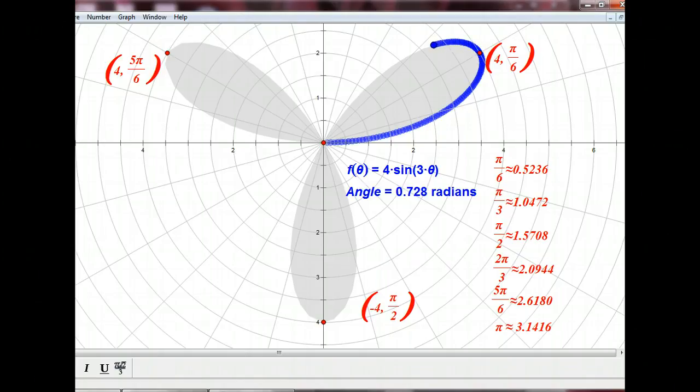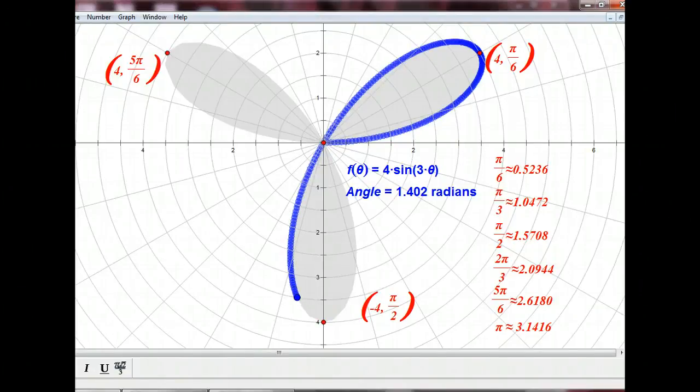And now it's going to head down the other side of the petal. So we're coming into pi over 3, which is about 1.04. So you can see it's pretty close to that right now. Now what I want you to notice after we move past pi over 3 is that it goes down to the petal tip that's going to be having a petal tip at negative 4 and pi over 2. So it's not going over to the 5 pi over 6 petal tip.